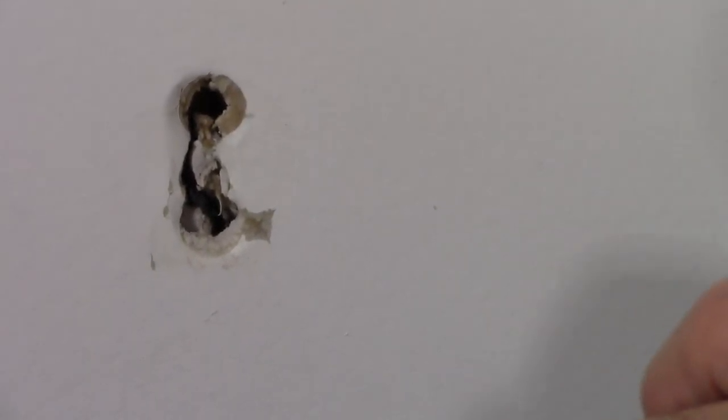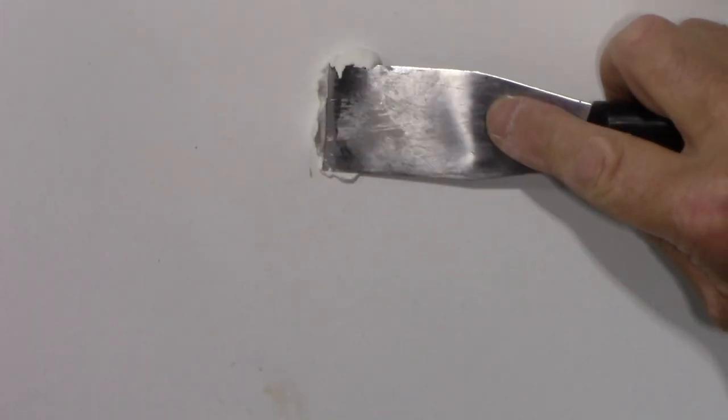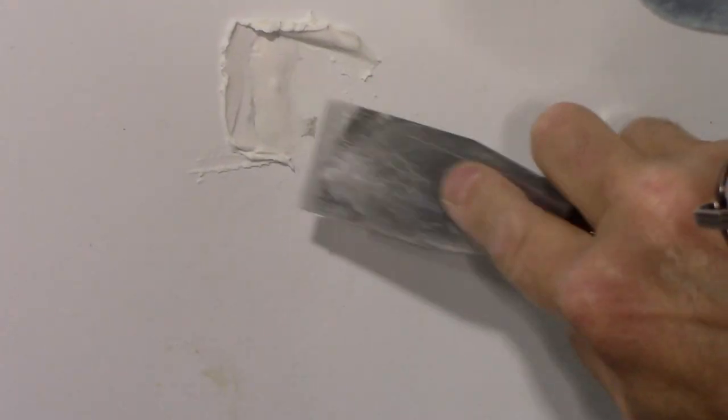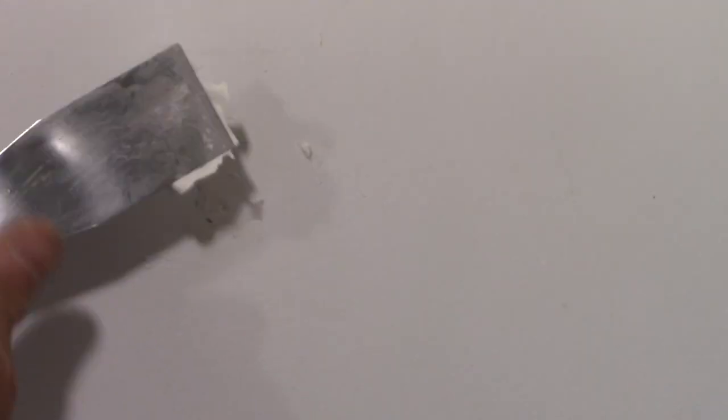Now we take our non-shrinking spackle. We're going to force it inside the hole itself. Push it in there so that it's a good significant amount going inside the hole. We want to put a lot in there so that way it'll fill it all the way up. As I'm pushing on this spackle here, I'm pushing it inside the wall.